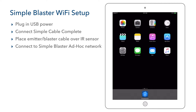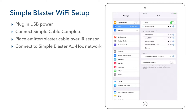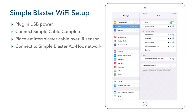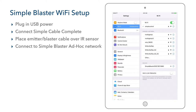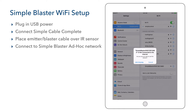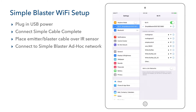Next, we connect to the Simple Blaster's ad hoc network. To do this, we go to Settings on our iOS controller and select Wi-Fi. We should see our Simple Blaster listed under the Devices section — we select it. We then get a pop-up that this does not have internet, and we select Join Anyway. We wait a couple of seconds for it to connect and open the Simple Blaster's Network Settings webpage.